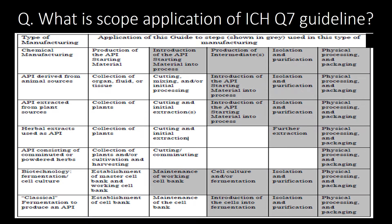What is the scope and application of ICH Q7 guideline? You can refer to the below table for scope and application of ICH Q7 guideline. In the below table, the first column represents the seven different types of API manufacturing processes.